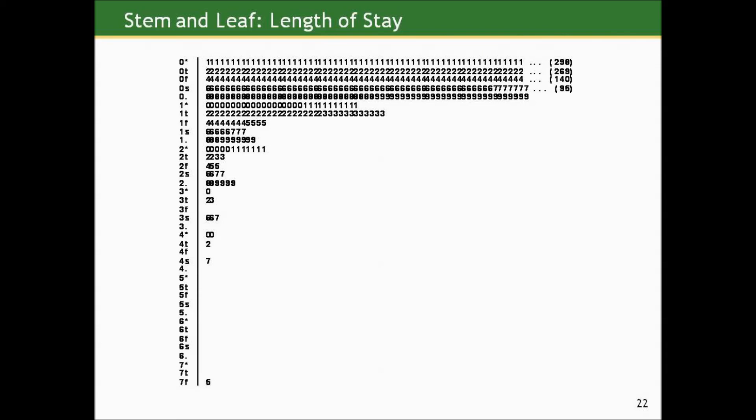How about a stem and leaf plot? Well, we've got a thousand observations here. You can see that the leaves on the first set of stems have dots at the end and then give a number — because in this data set, 298 of the 1,000 records had a length of stay of one day. So instead of showing 298 ones, it gives a few and then the raw number. With this much data and this skewedness, the stem and leaf is probably not a very efficient display and would need to span a couple of pages. The stem and leaf is interesting, if not all that useful in most data sets.